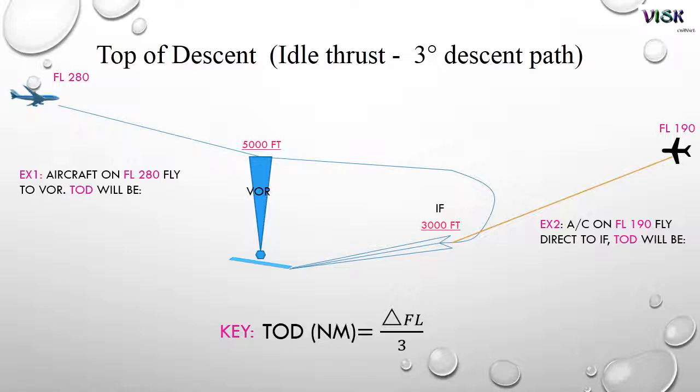Refer to the formula, top of descent equals flight level divided by 3. We know already flight level 280 minus 5000 equals flight level 230.